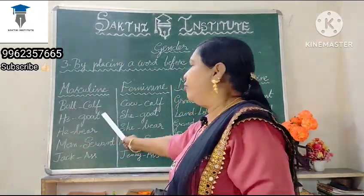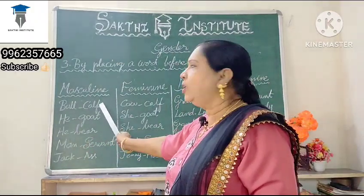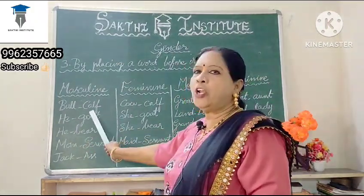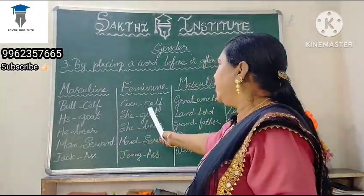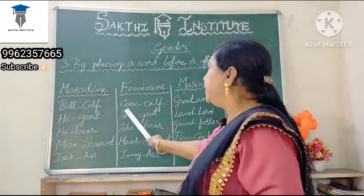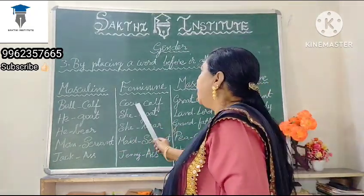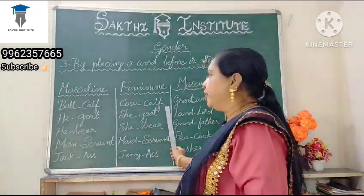Bull — what is meant by bull? Bull is the masculine gender, the aan kanukutti. Changing it to cow — cow is the feminine gender, the pen kanukutti.